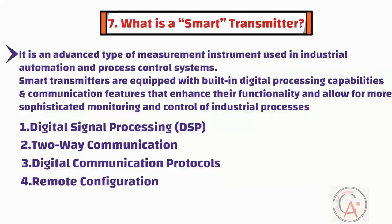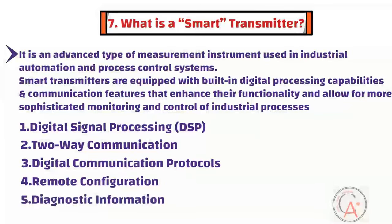The fifth characteristic is diagnostic information. Smart transmitters provide diagnostic information about their own health and status, including information about sensor health, internal temperature, and any potential issues or failures. Operators can use this data for predictive maintenance.